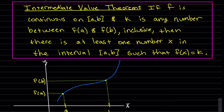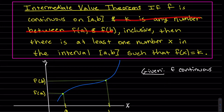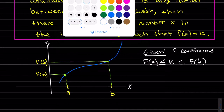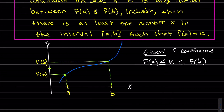So to draw that out: given f is continuous and k is a number in between the y values — so it's somewhere here, k is in between, inclusive, between f(a) and f(b). Without loss of generality, f(b) could be first. So we draw k; it doesn't have to be exactly in the middle, just somewhere in between. It hits the graph somewhere there and then goes down.